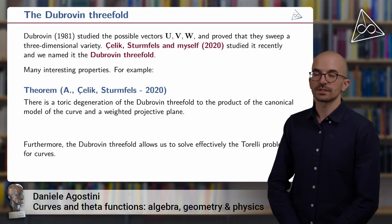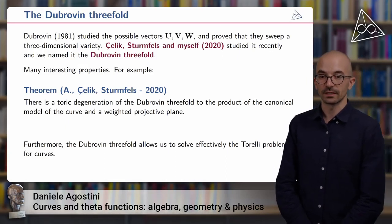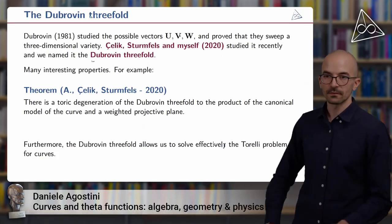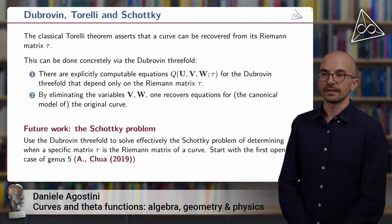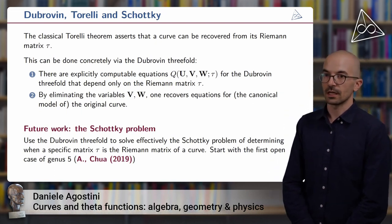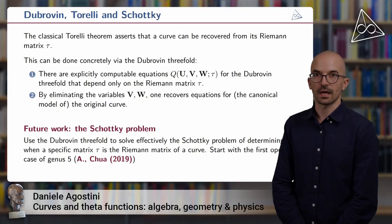Something else that was already observed by Dubrovin himself is that the Dubrovin threefold allows us to solve effectively the Torelli problem for curves. So what's that? Well, the classical Torelli theorem asserts that a smooth curve can be recovered uniquely up to isomorphism from its Riemann matrix tau.